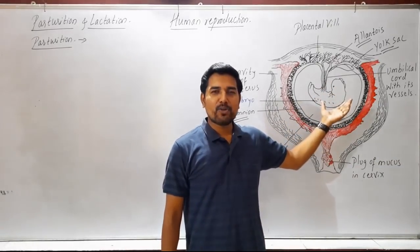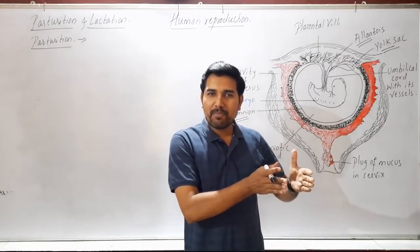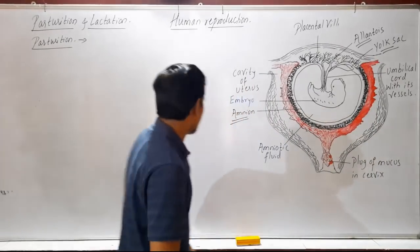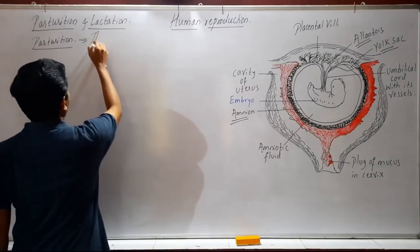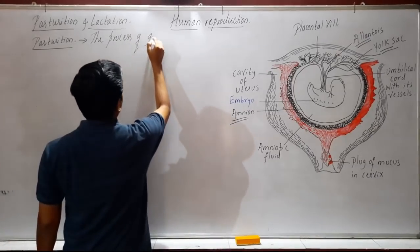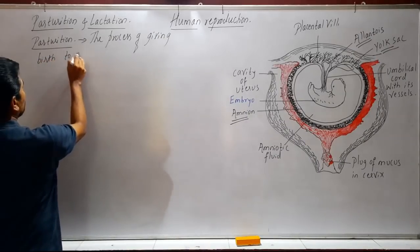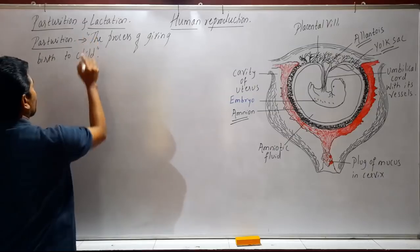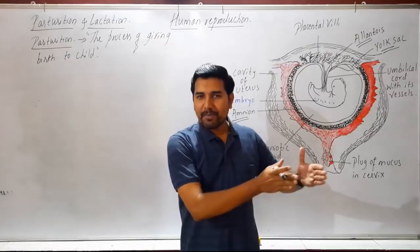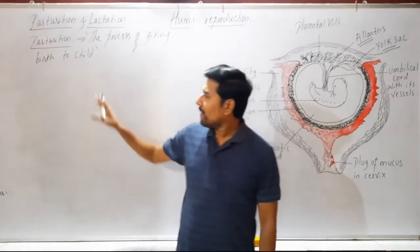Human placenta is said to be decidual type. That means after nine months, there is a delivery of the baby. This process is termed as parturition and it is under the control of hormones. The process of giving birth to a child — the delivery of a fully developed fetus or baby — is called parturition.